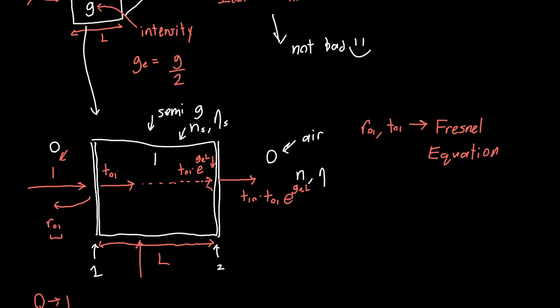So now we have to figure out what happens inside the semiconductor. We've got another reflection, so R_10 T_01 E to the G_E L. And now this will propagate again, give us more gain, reflect again, reflect again, reflect again. And you want to add up all of those fields and then figure out what the total field is transmitted at the output from all these infinite reflections. If you do that, you'll start adding up a bunch of terms and you start to notice a pattern.